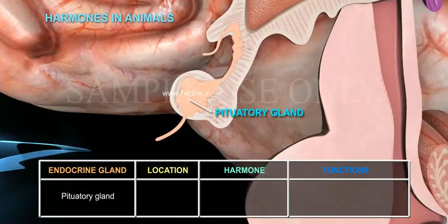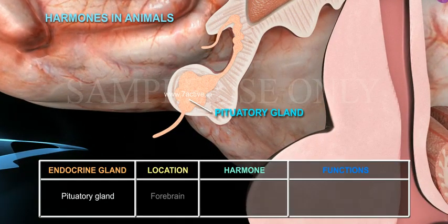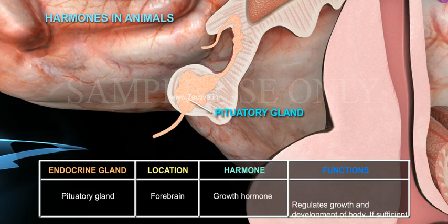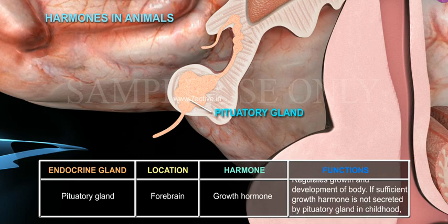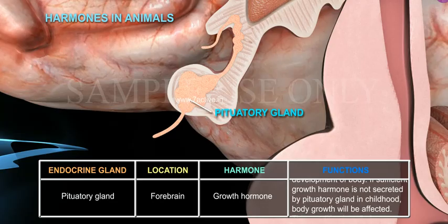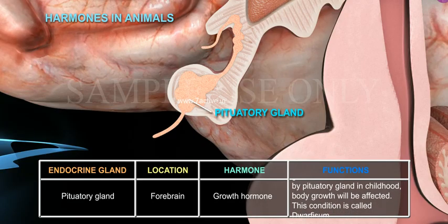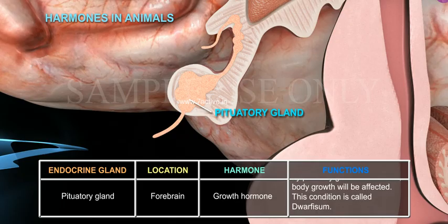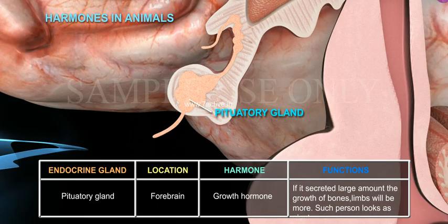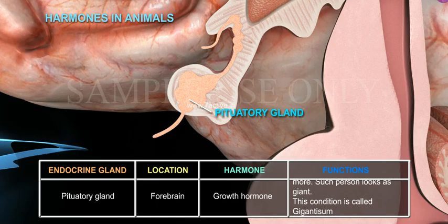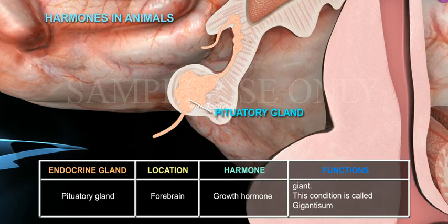The Pituitary gland is located in the forebrain. Its hormone is the growth hormone, which regulates growth and development of the body. If sufficient growth hormone is not secreted by the pituitary gland in childhood, body growth will be affected — this condition is called dwarfism. If it is secreted in large amounts, the growth of bones and limbs will be more, and such a person looks like a giant. This condition is called gigantism.